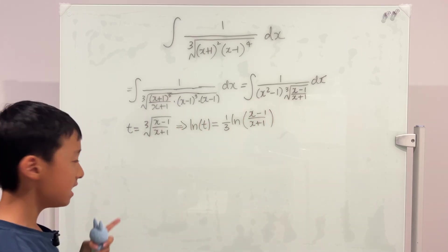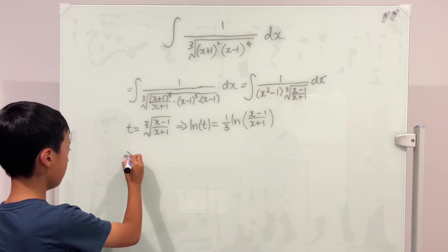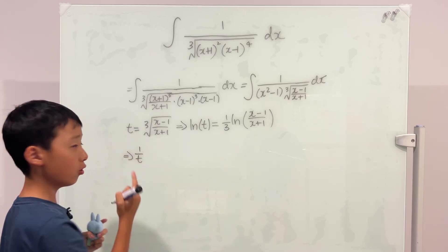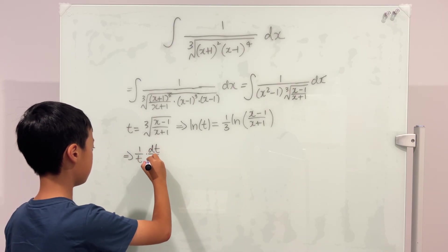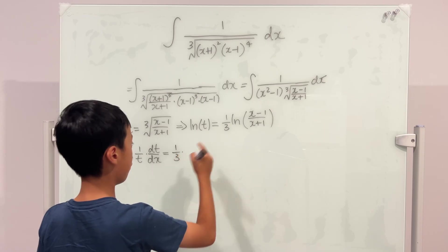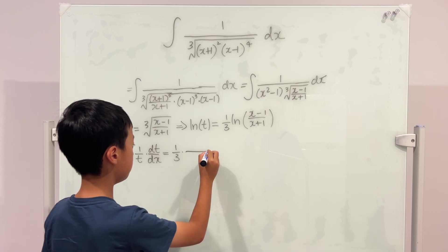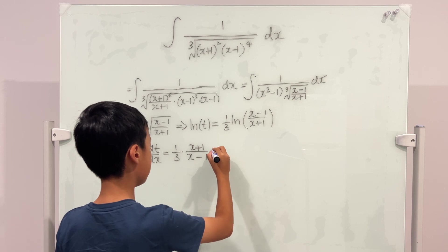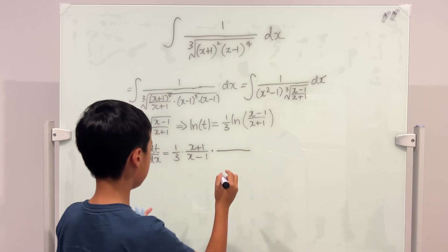Now it's way easier to differentiate, so why don't we differentiate it? There will be a chain rule, so it's not only 1 over t, it will also be times the derivative of t which is dt over dx. This is equal to one third times, the derivative of a ln is the reciprocal, so the bottom is now x minus 1 and the top is x plus 1 times the chain rule, the derivative of this inside which uses the quotient rule, so it is x plus 1 squared.